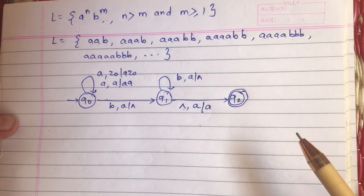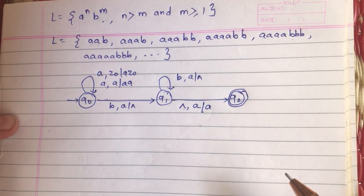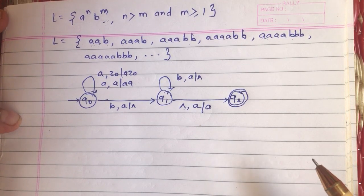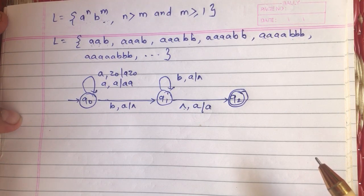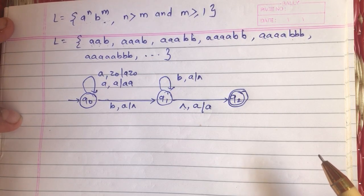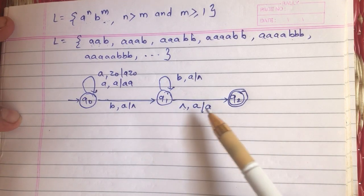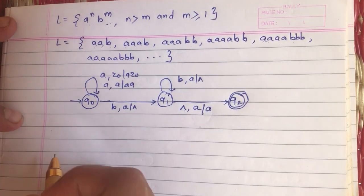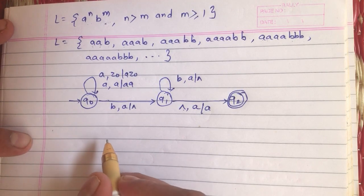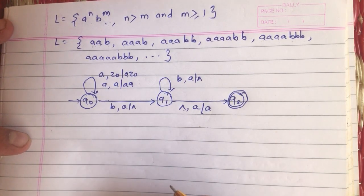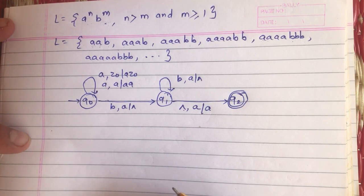The acceptance by final state definition states that after processing the entire input string, if we enter into the accepting state, regardless of what is on the top of stack, the string is accepted by our PDA. So here our top of stack will remain as a and not z0. This is how the PDA will look for the language a^n b^m where n > m and m ≥ 1.